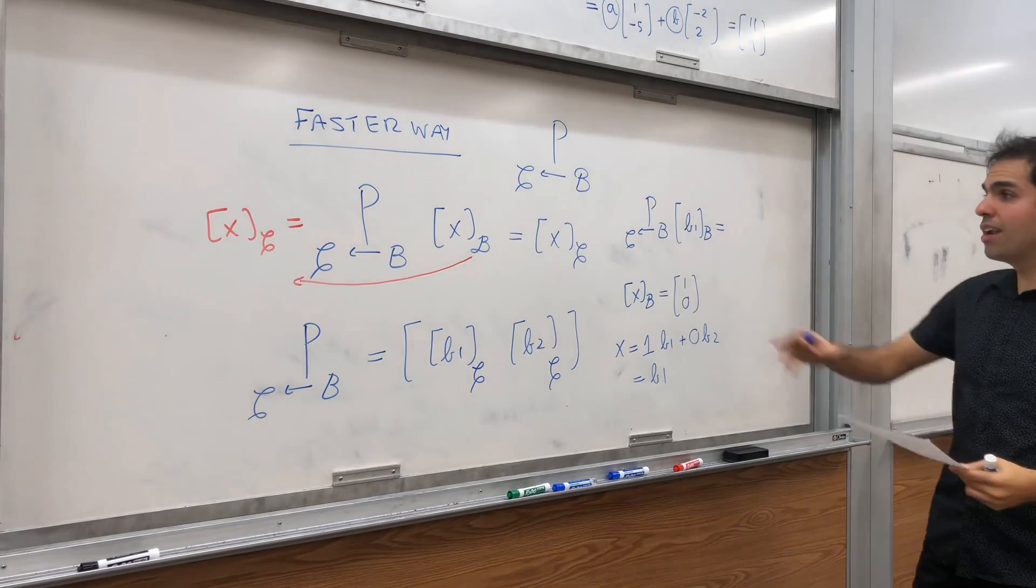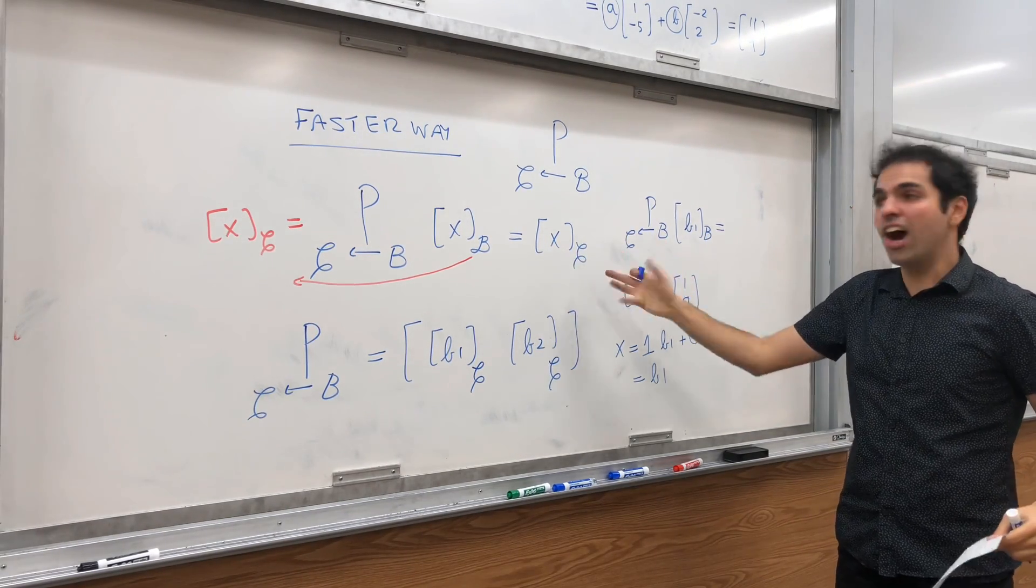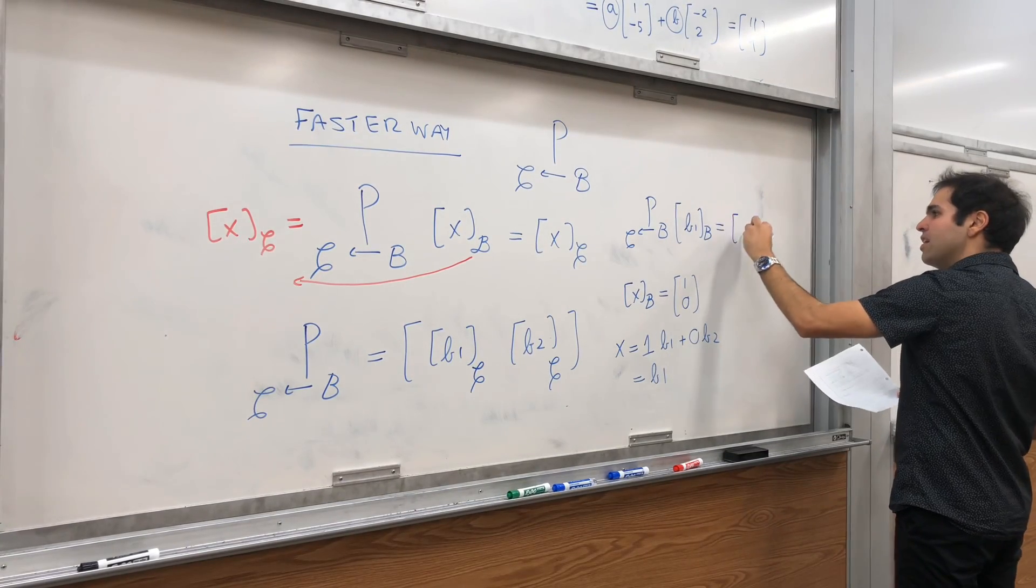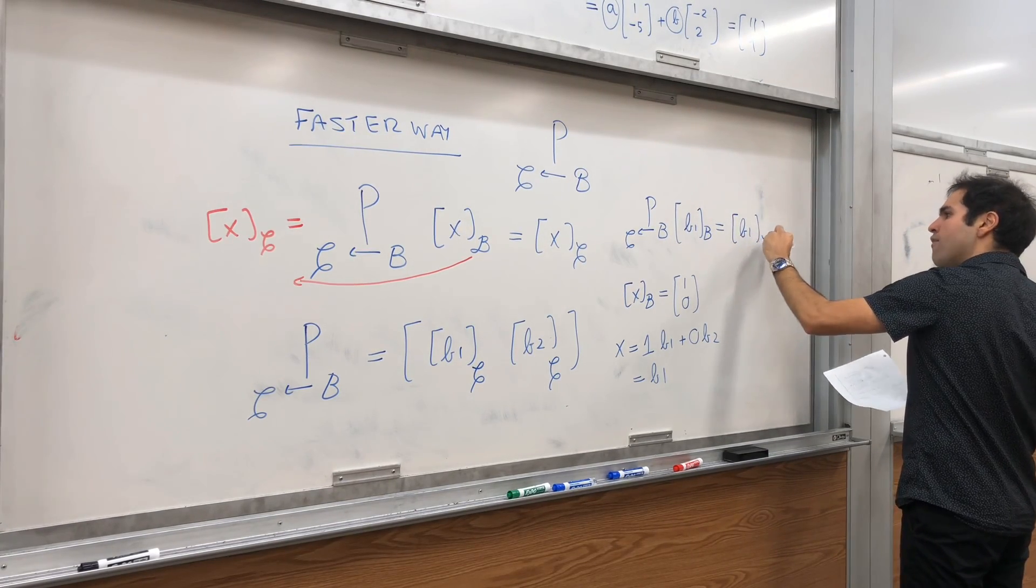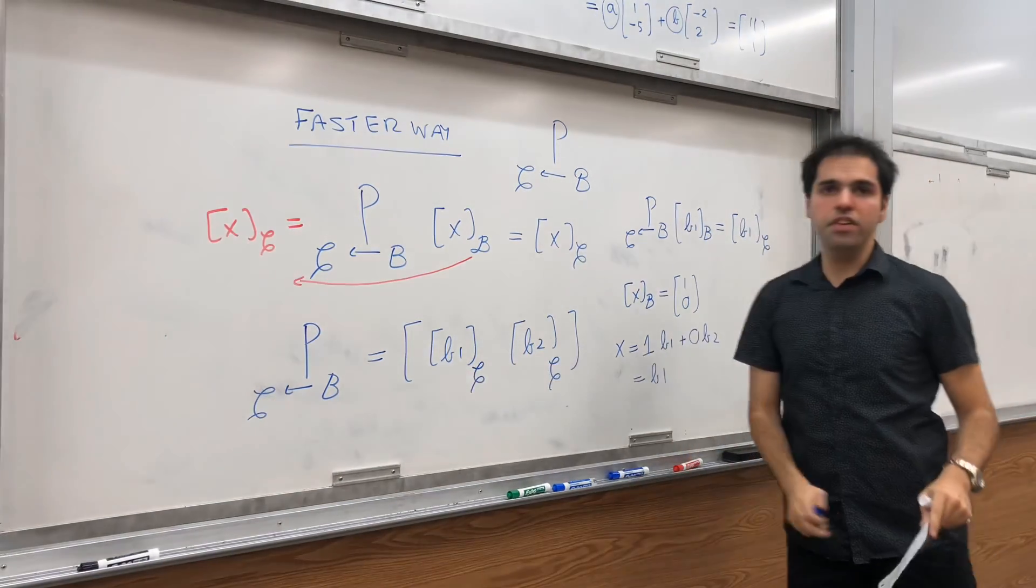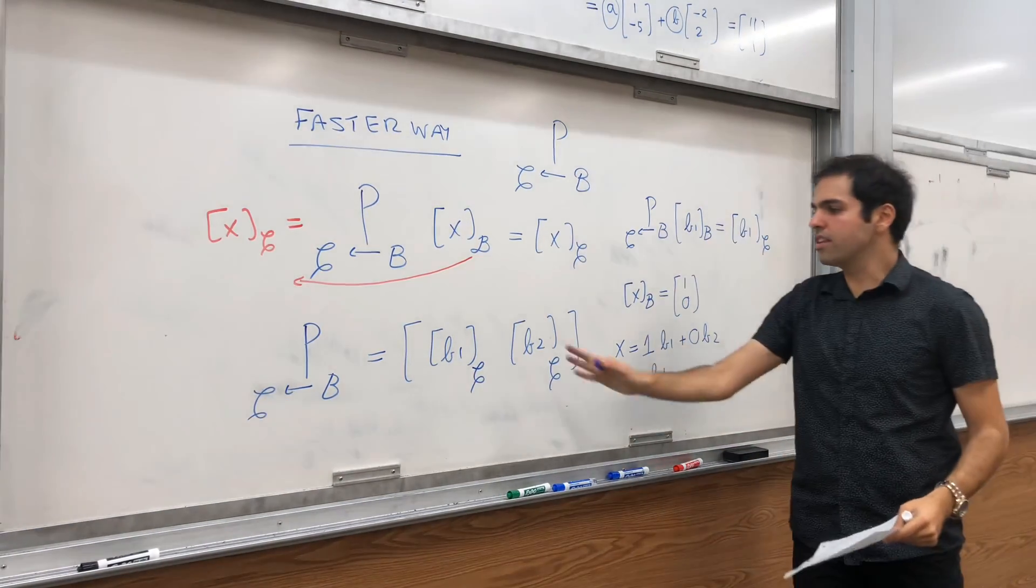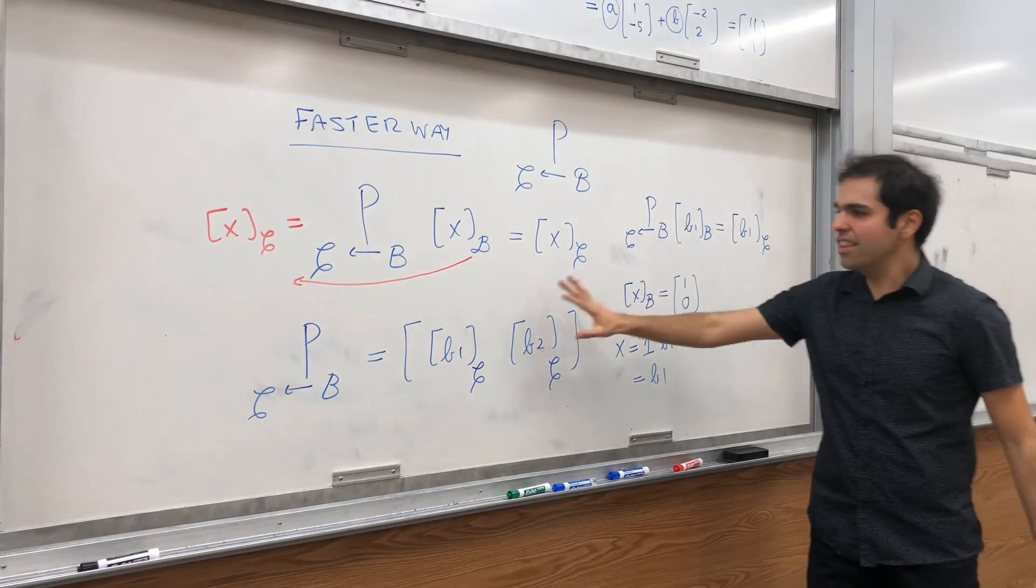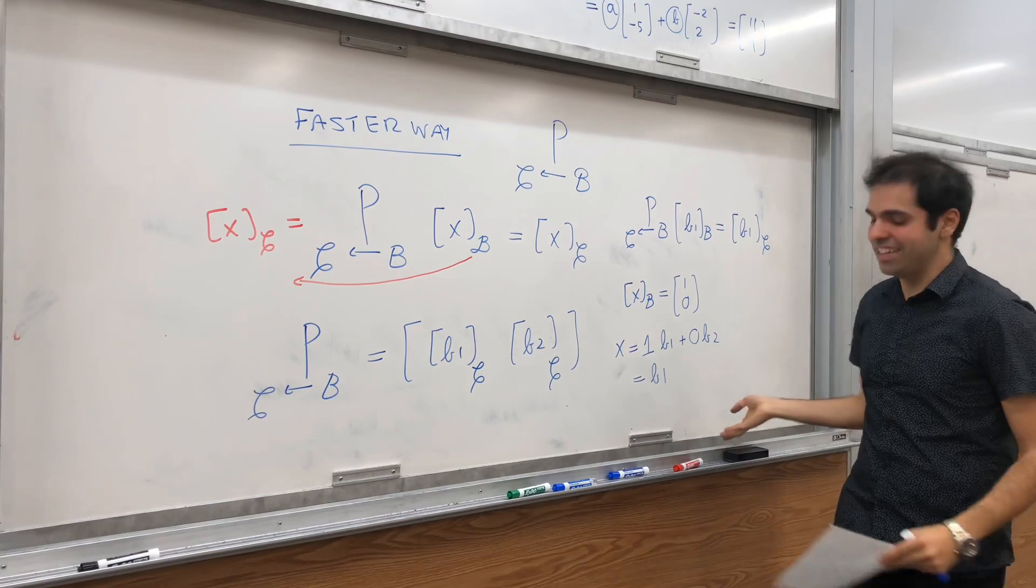but you would like this to be X, C. That's the output you want. Therefore, since X is just B1, the first column of P, B, C should be B1, C. And, that's how you get the first column. And, to get the second column is the same thing, but with B2. So, this is why we have this definition. Good.